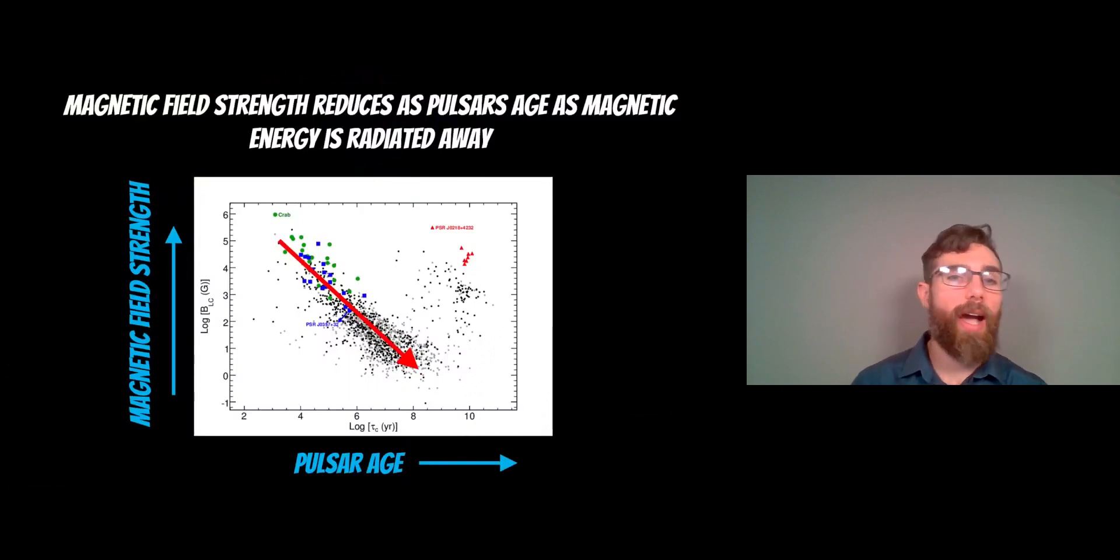If we were to look at the age of a pulsar and its magnetic field strength, we would expect there to be a downtrend. That magnetic braking reduces the magnetic field strength. We get a decay in the field strength as they get older.